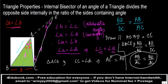And basically, this is what we had to prove — that the internal bisector of angle A, which is AD, divides the opposite side internally in the ratio of the sides containing the angle. And hence, we have proved this property.